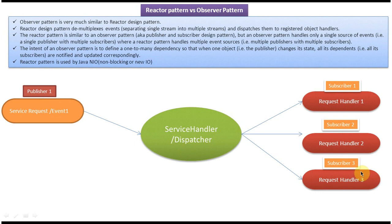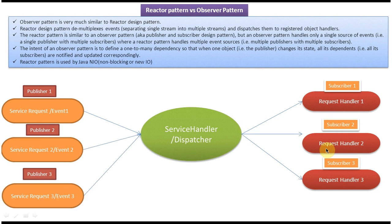So it is like a one-to-many dependency — a single publisher and many subscribers in the case of the observer pattern. But in the case of the reactor pattern there will be many publishers and many subscribers. When multiple publishers publish an event to the service handler, that event will be sent to multiple subscribers, and the service handler will take care of that.